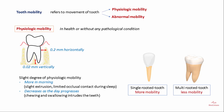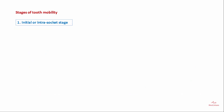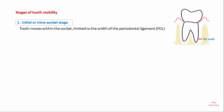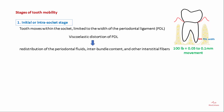There are different stages of physiologic tooth mobility. In the first, the intra-socket stage, the tooth moves within the socket limited to the width of the periodontal ligament. There is viscoelastic distortion of the periodontal ligament, resulting in redistribution of periodontal fluids, inter-bundle content, and other interstitial fibers.